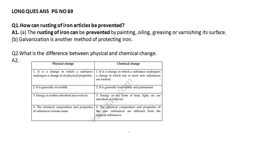Coming on the next part — long question answers. How can the rusting of iron be prevented? We can prevent the rusting of iron by painting, oiling, greasing, and galvanization is also a method by which we can prevent rusting. Next: what is the difference between physical and chemical change?